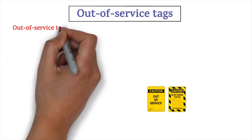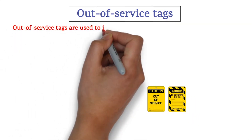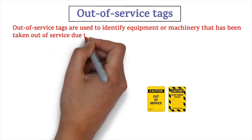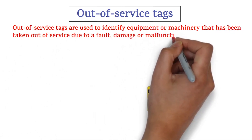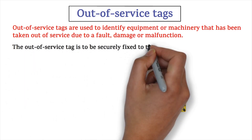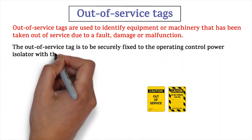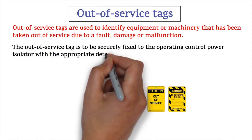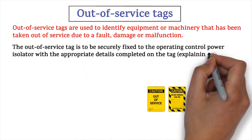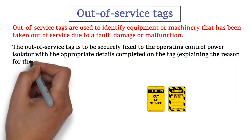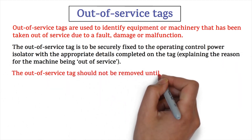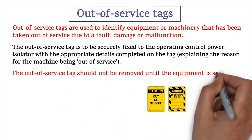Out-of-service tags are used to identify equipment or machinery that has been taken out of service due to fault, damage, or malfunction. The out-of-service tag is to be securely fixed to the operating control or power isolator, with the appropriate details completed on the tag explaining the reason for the machine being out of service.